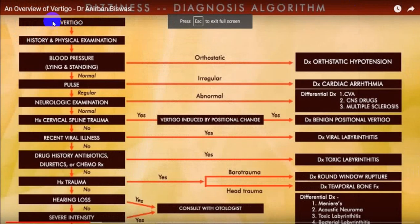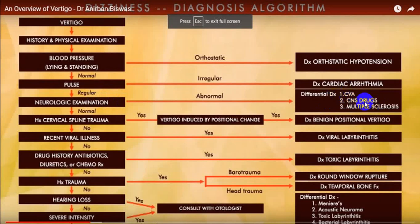If clinical history favors vertigo, take a good history and physical examination, then assess for central or peripheral vertigo. If not clear, check blood pressure in supine posture and then standing posture — a fall of more than 20 mmHg is straightforward orthostatic hypotension. Look at the pulse: if irregular, more in favor of cardiac arrhythmias. Look at neurological examination: if abnormal, more in favor of cerebrovascular stroke or multiple sclerosis. If CNS examination is absolutely normal, look at the cervical spine.